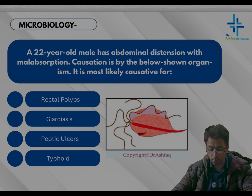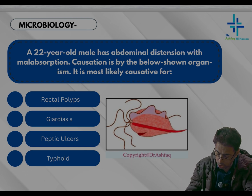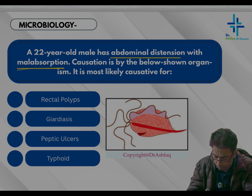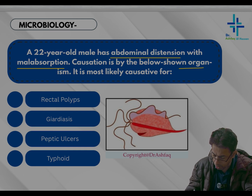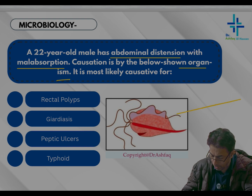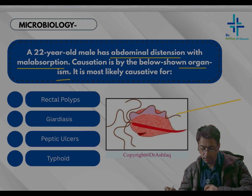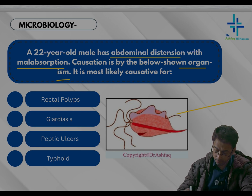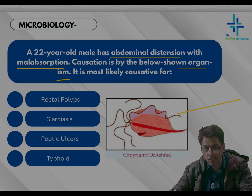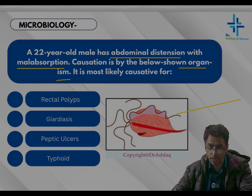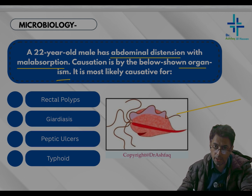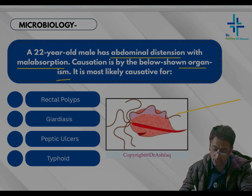The second question is from microbiology. A 22-year-old male has abdominal distension with malabsorption — these are the clinical clues. The causation is by the organism shown below. It is an indirect question: it does not tell you the organism only, but asks for the most likely disease resulting from infestation by this organism.